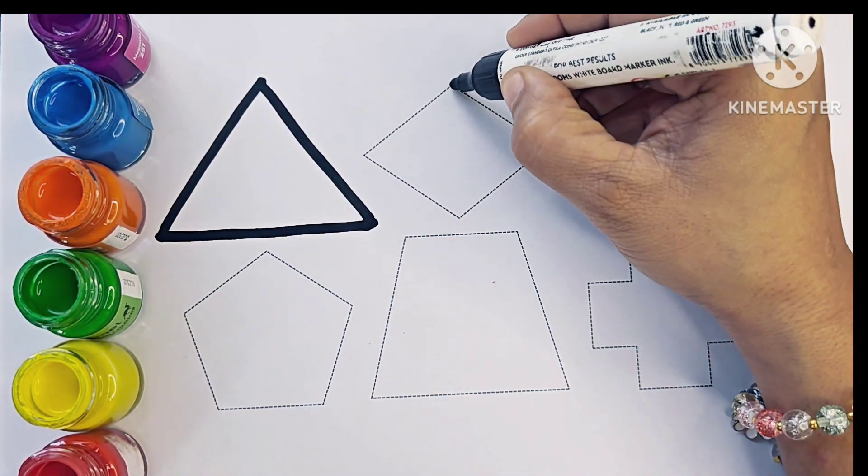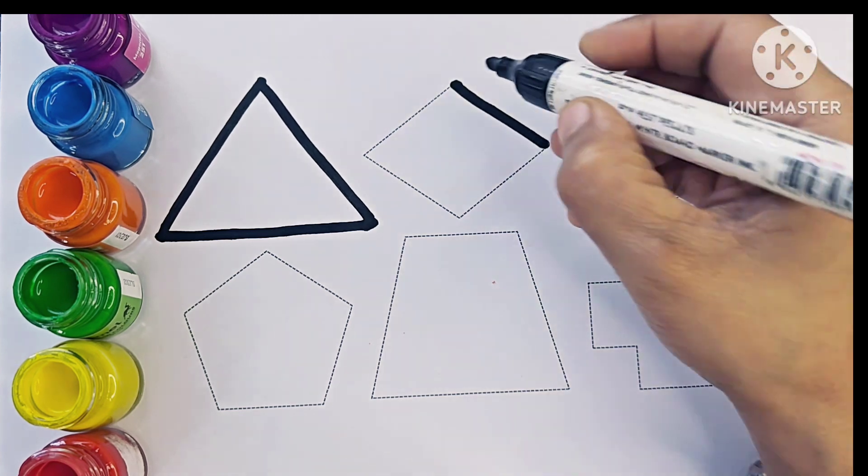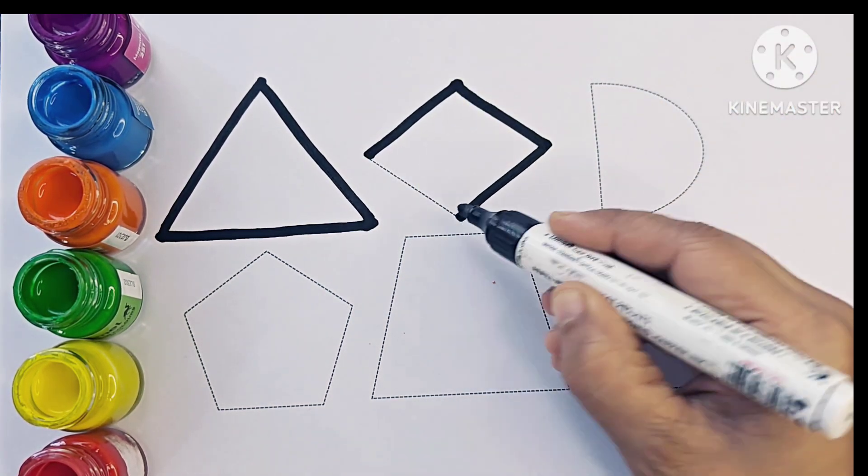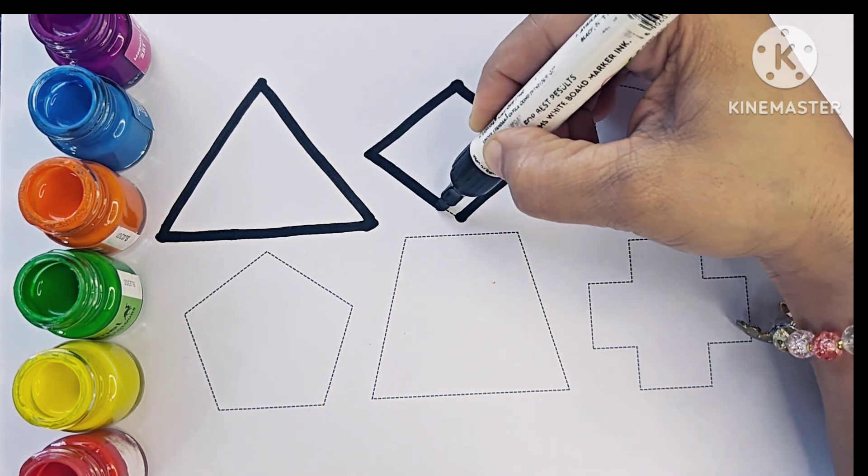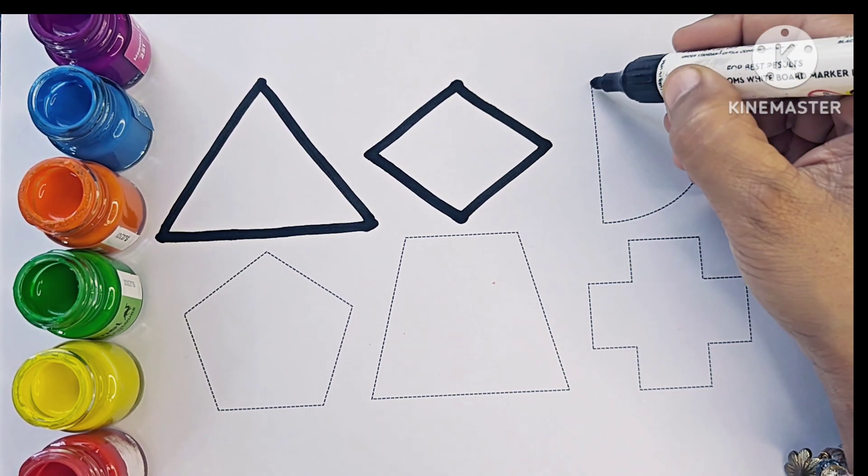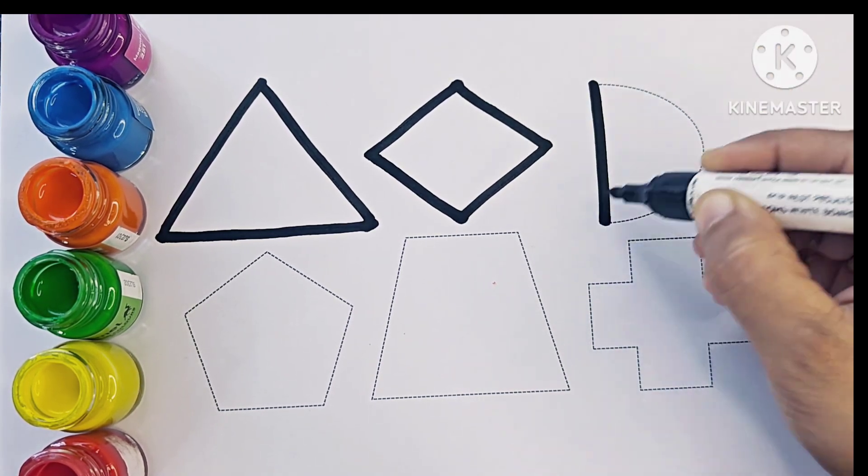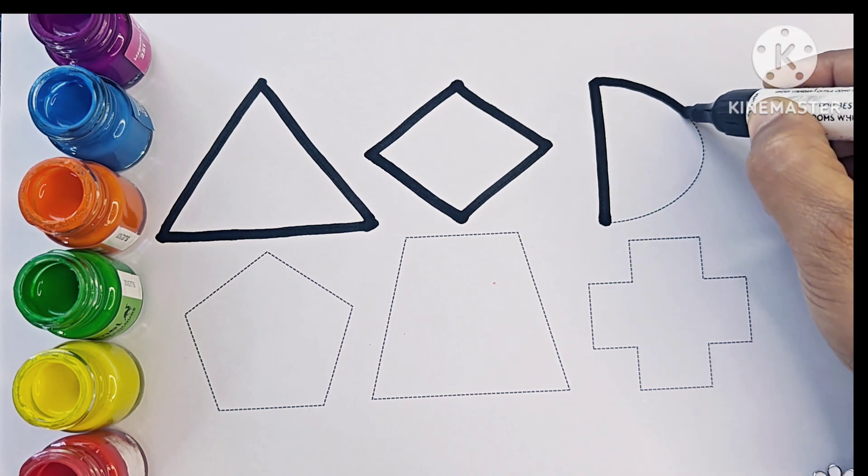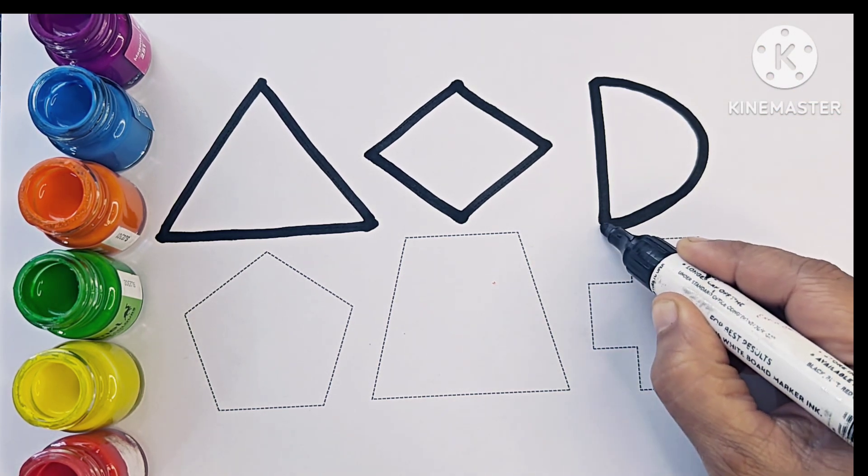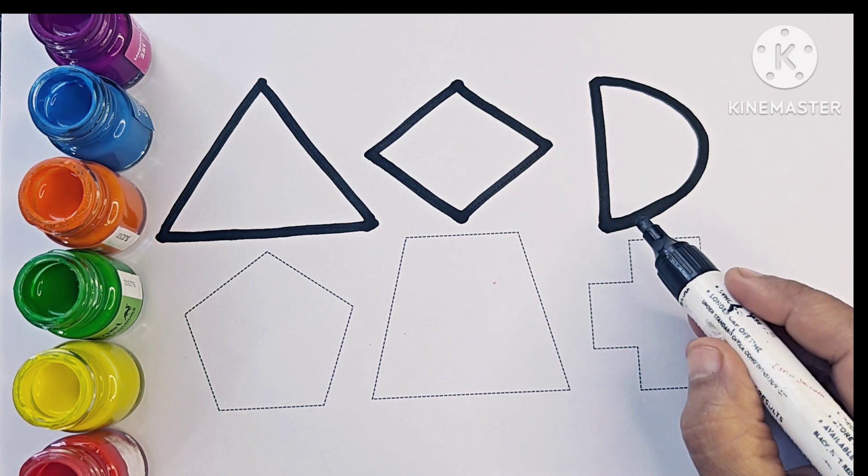Triangle. Rhombus or diamond. Semicircle or half circle.